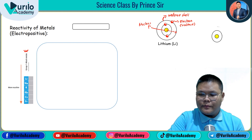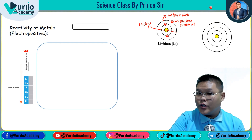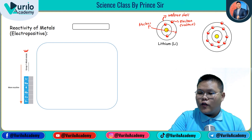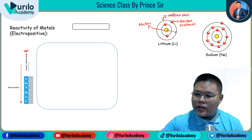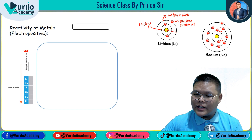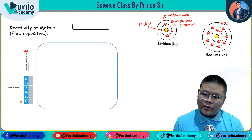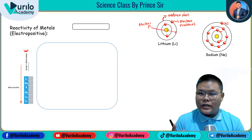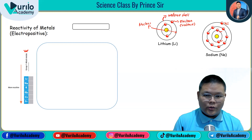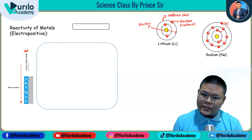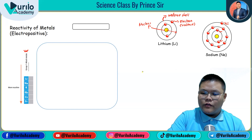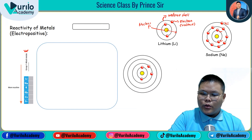Now let's look at sodium. Sodium has atomic number 11. Its electron configuration is 2, 8, 1 — so the first shell has 2 electrons, the second has 8, and the third shell has 1. From this we can develop the atomic structure of sodium.